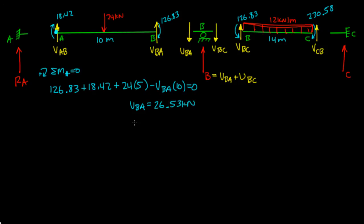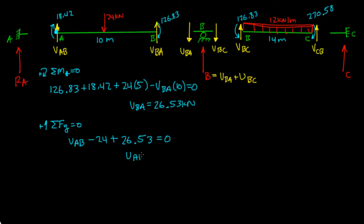Taking the summation of forces in the y-direction equal to zero for member a-b: V_ab minus 24 kilonewtons plus V_ba — which is 26.53 — equals zero. Solving for V_ab gives negative 2.52 kilonewtons, so our assumption for V_ab was wrong — it's actually going down.